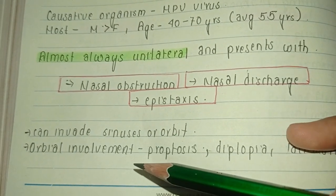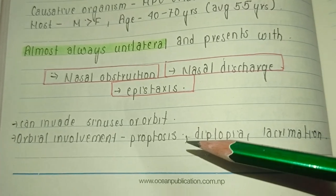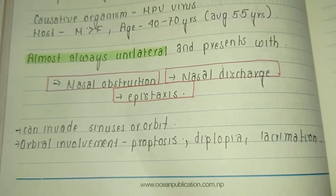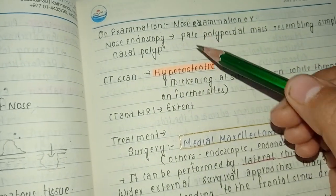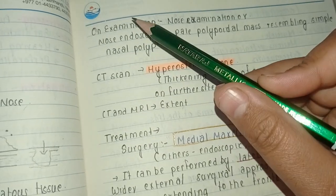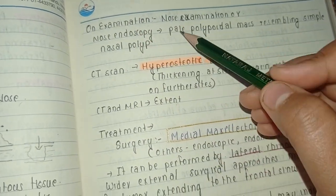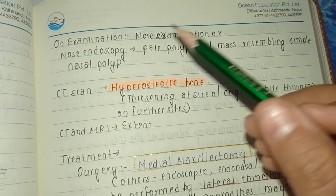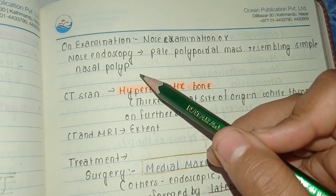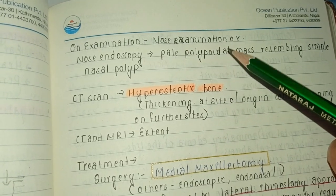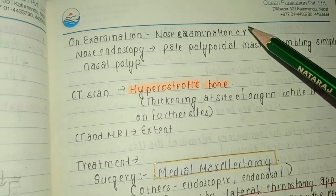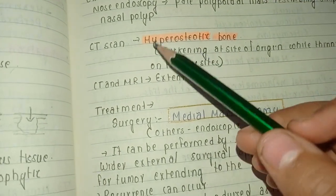The tumor can invade the sinus or the orbit as well. When there is orbital involvement, features include proptosis — that is, bulging out of the eyeball — diplopia, meaning double vision, and lacrimation. On nasal endoscopy, there is a pale polypoidal mass resembling a simple nasal polyp, so we have to differentiate it from a polyp.